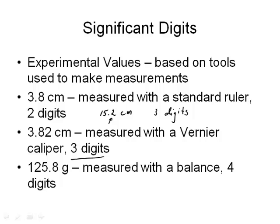A typical measurement on a beam balance might be four digits. For example, that same block of wood might have a mass of 125.8 grams. Each of those numbers is significant, and therefore there are four digits there.